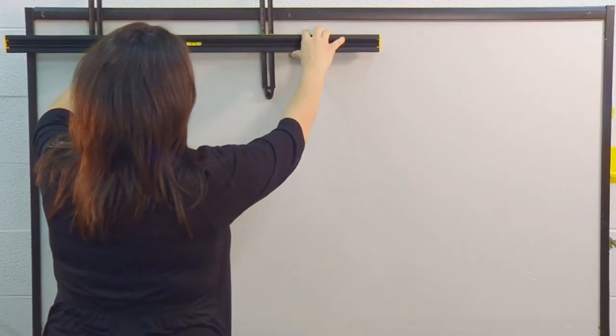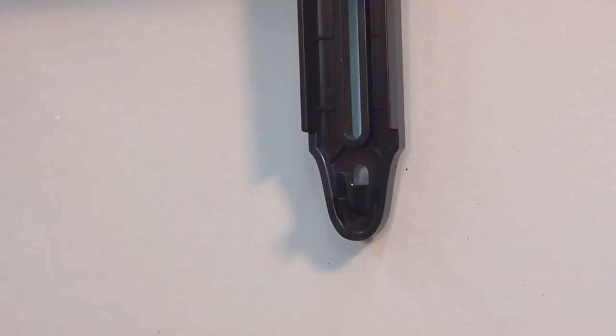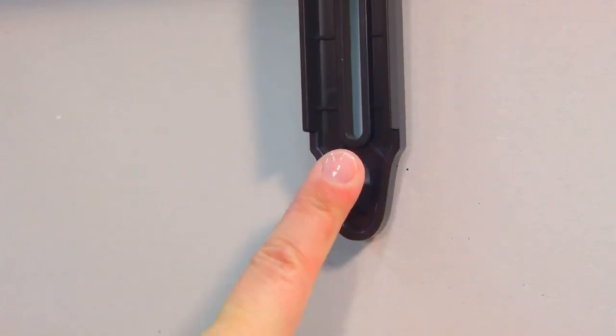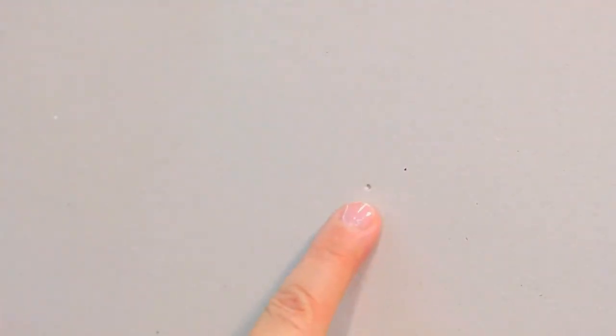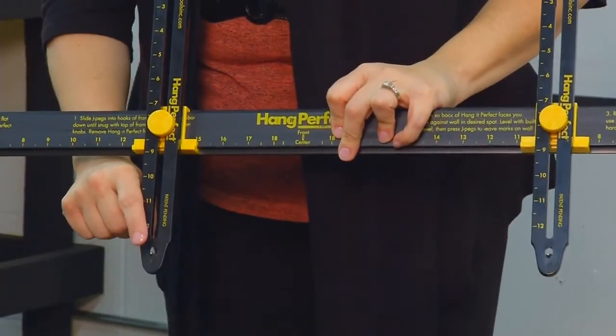Find your desired spot on your wall. Once you've found your desired spot and your level, simply press on the JPEGs to create these dimples in the wall made by the pins on the Hang It Perfect.